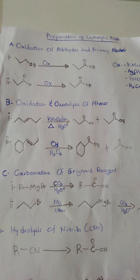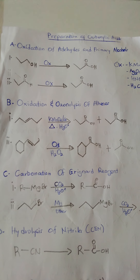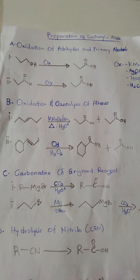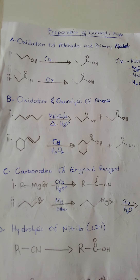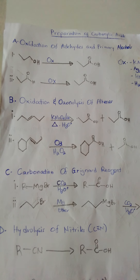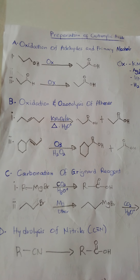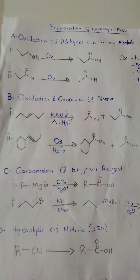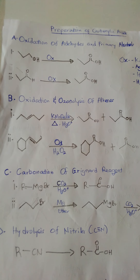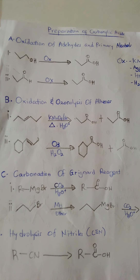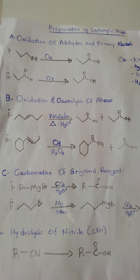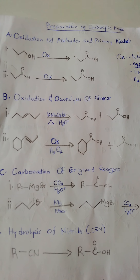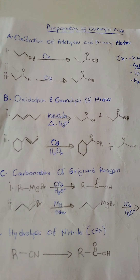The first method is the oxidation of aldehydes and primary alcohols. You have an aldehyde and you subject it to an oxidizing agent. That oxidizing agent will convert the aldehyde portion to a carboxylic acid. Similarly, if you have a primary alcohol and you subject it to an oxidizing agent, it will be oxidized to a carboxylic acid.